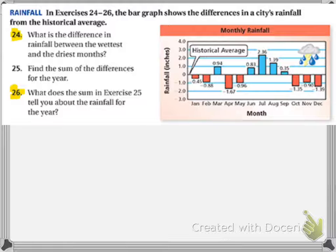Okay, so let's see, the wettest month is going to be the highest bar that is blue, so that is this one. It's kind of hard to read, but that says 2.36. And then the driest month, that's going to be the biggest bar below, the biggest red one, which is negative 1.67.